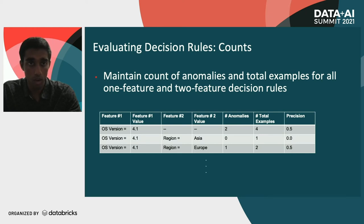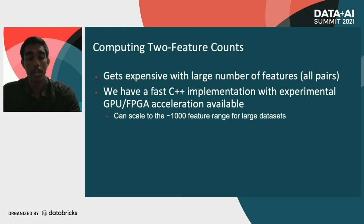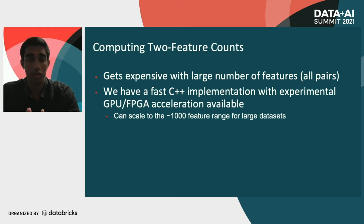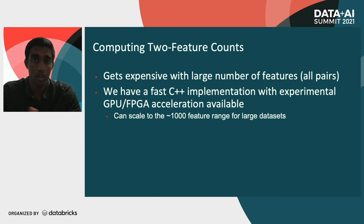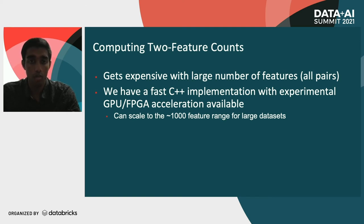Because computing all these two-feature counts is quite expensive, the way we make this approach practical is with a fast C++ implementation that's fully parallelized to compute all these counts. We also have experimental GPU and FPGA acceleration available — you can see this at the GitHub I'll link shortly. In practice we can scale to the thousand-feature range even for fairly large datasets, and you can generate new features from existing data if you want to explore better decision rules.